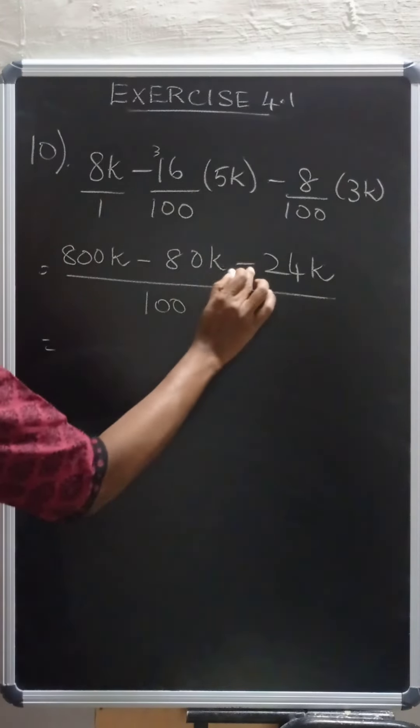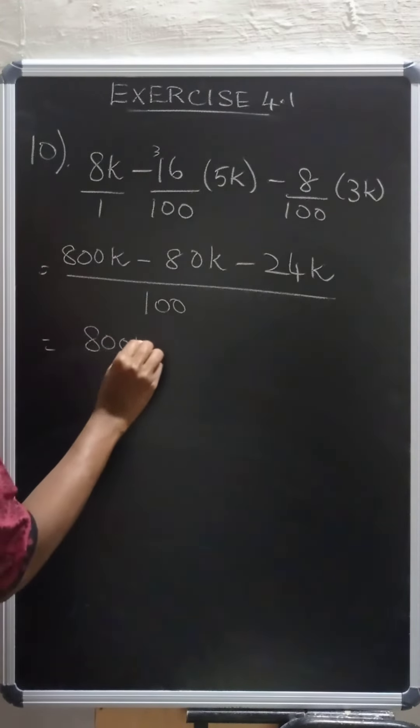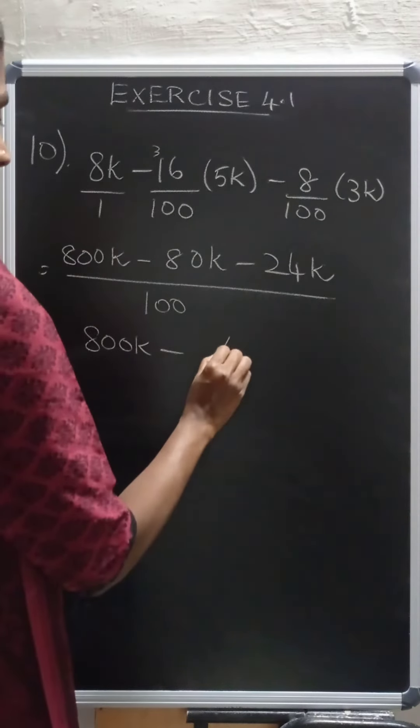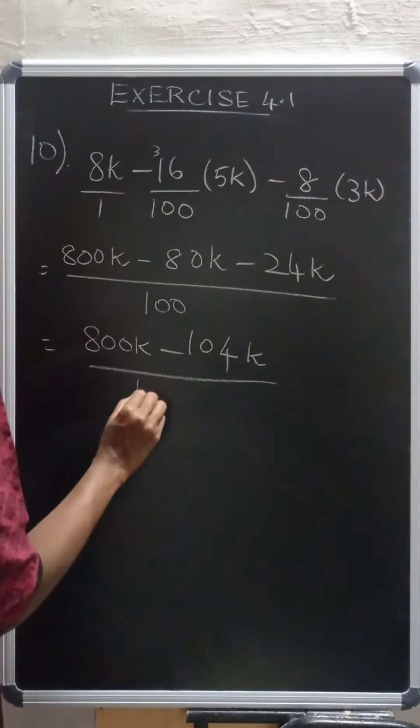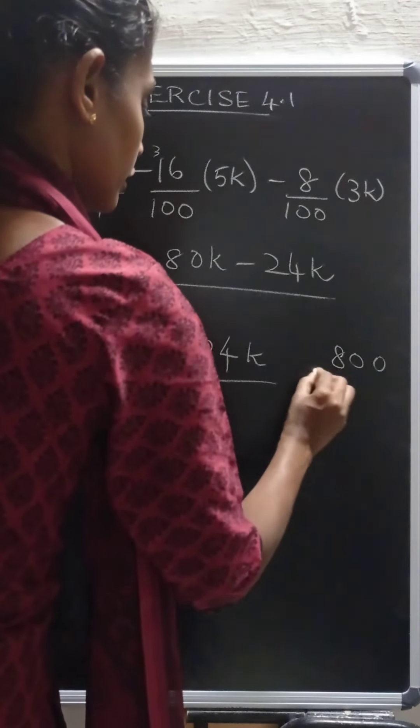80k minus 8 threes are 24k. These two, minus minus is plus. So we can add those two things. 800k minus 104k. Now subtract 800 and 104k.